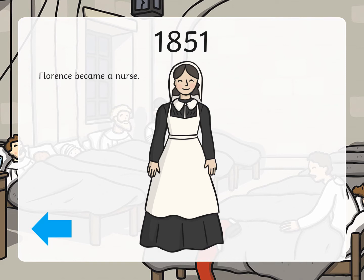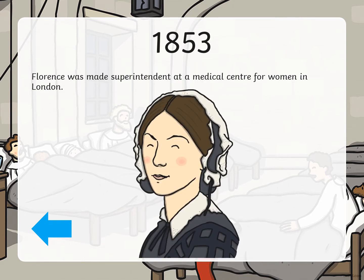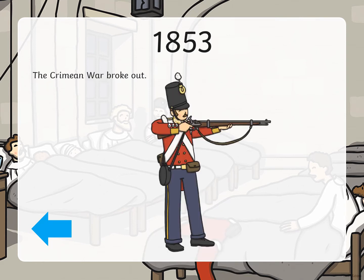In 1851, Florence became a nurse. In 1853, Florence was made superintendent at a medical center for women in London, so she was the head person in charge. Also in 1853, the Crimean War broke out.